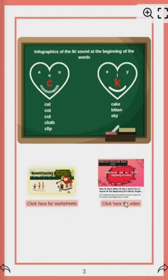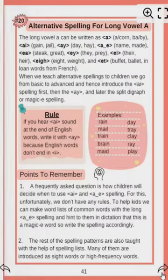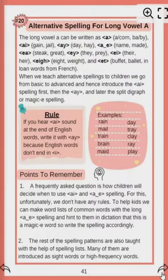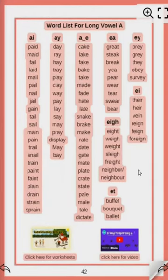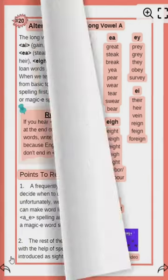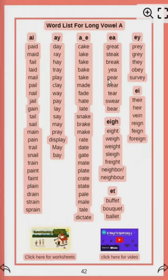And if you click here, you will land on my YouTube channel where you can watch a video tutorial on the specific rule. Then we have some other rules like this. This is what I was talking about — the alternative spellings and the word list. This is for long vowel A. The rules are listed here and the reading cards are here.